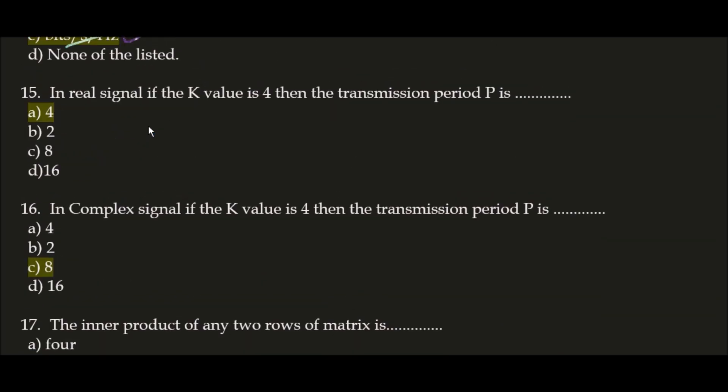Next question: in a real signal, if the k value is 4, then the transmission period P is 4. In real signals, the transmission period P equals the k value. For example, if k is 2 then P is 2.